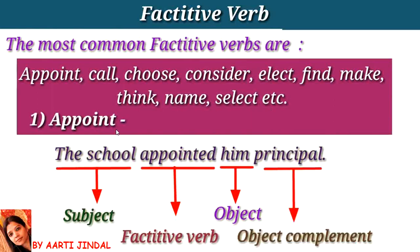The first verb is appoint. Example: 'The school appointed him principal.' Here, 'the school,' which is a noun, is the subject. 'Appointed,' which is the past form of the verb appoint, is the verb. 'Him,' which is a pronoun, is the object. 'Principal,' which is a noun, is the objective complement — it is used to describe and rename the object.